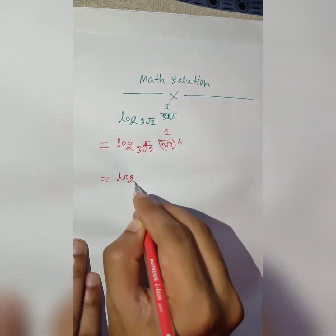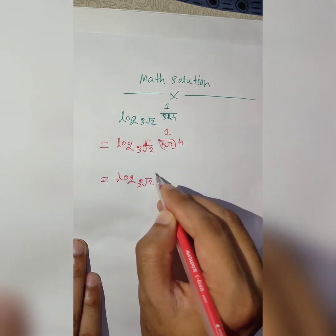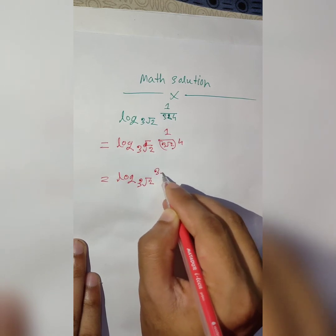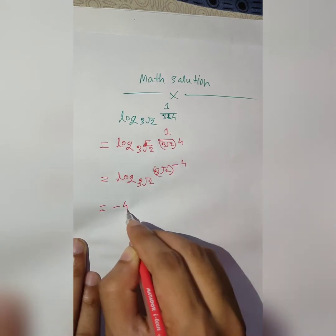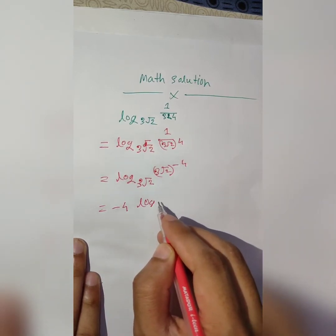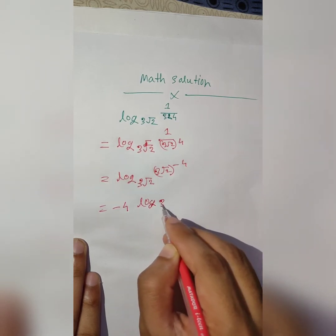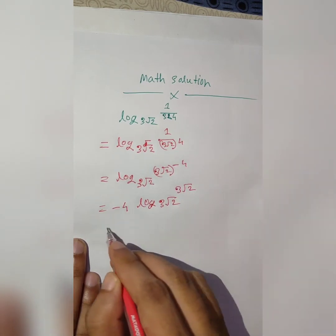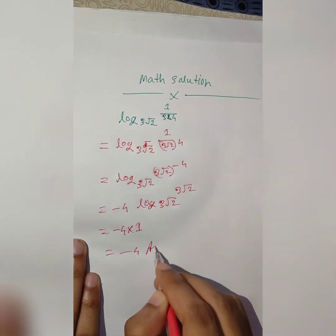log₃(3²), log₃(3³), log₃(3³) = 2, 3, 2, minus 4, minus 4 log, minus 4 into 1, minus 4.